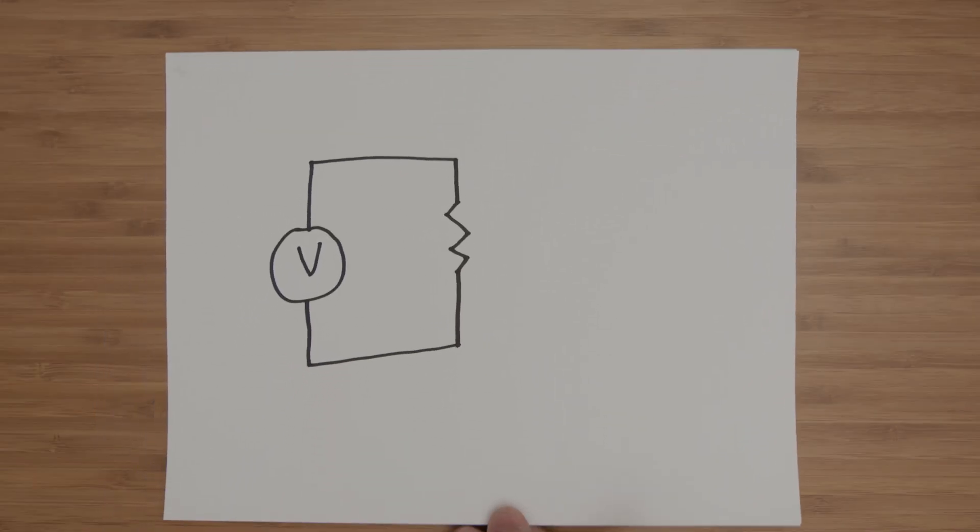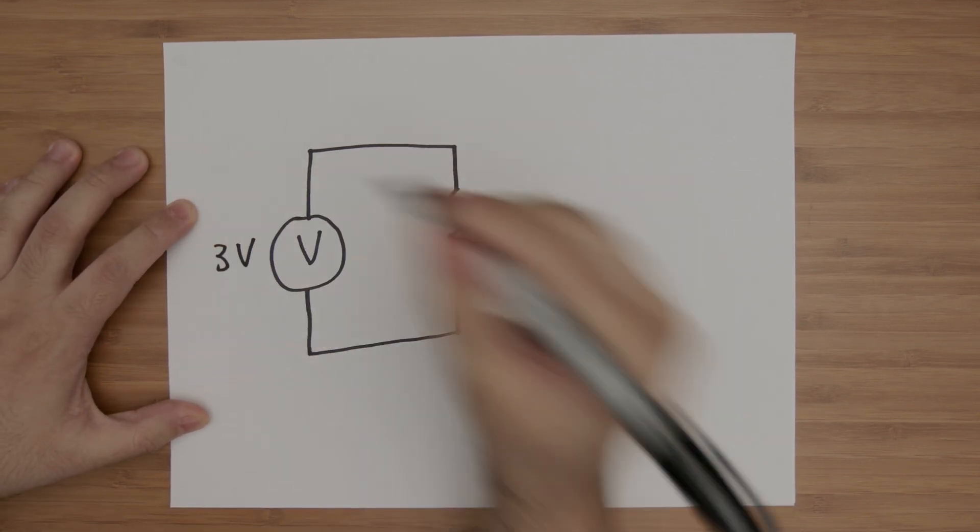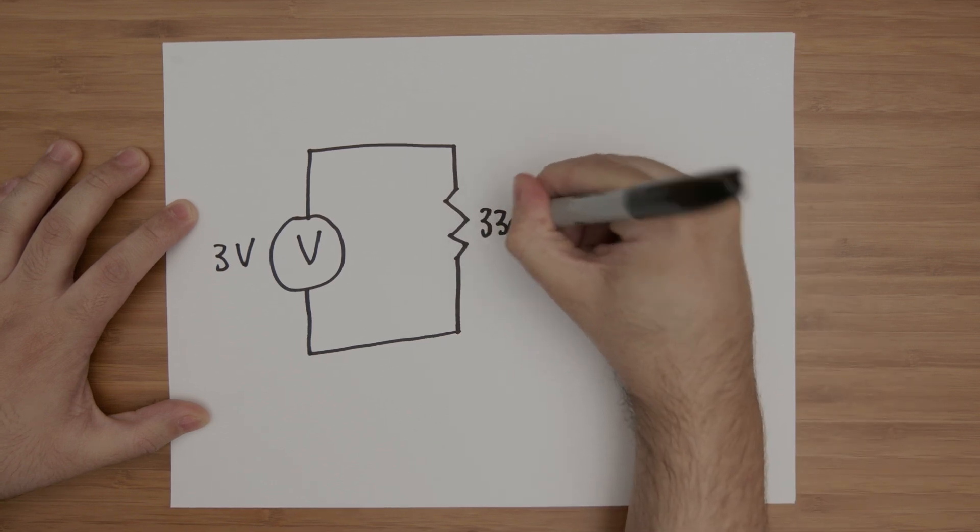Let's go ahead and dive into examples on paper and practice using this formula, and then build the circuit in real life to verify that our calculations worked. Let's say we have a simple circuit that has a power supply providing 3 volts, and we also know that the resistor's value is 330 ohms.